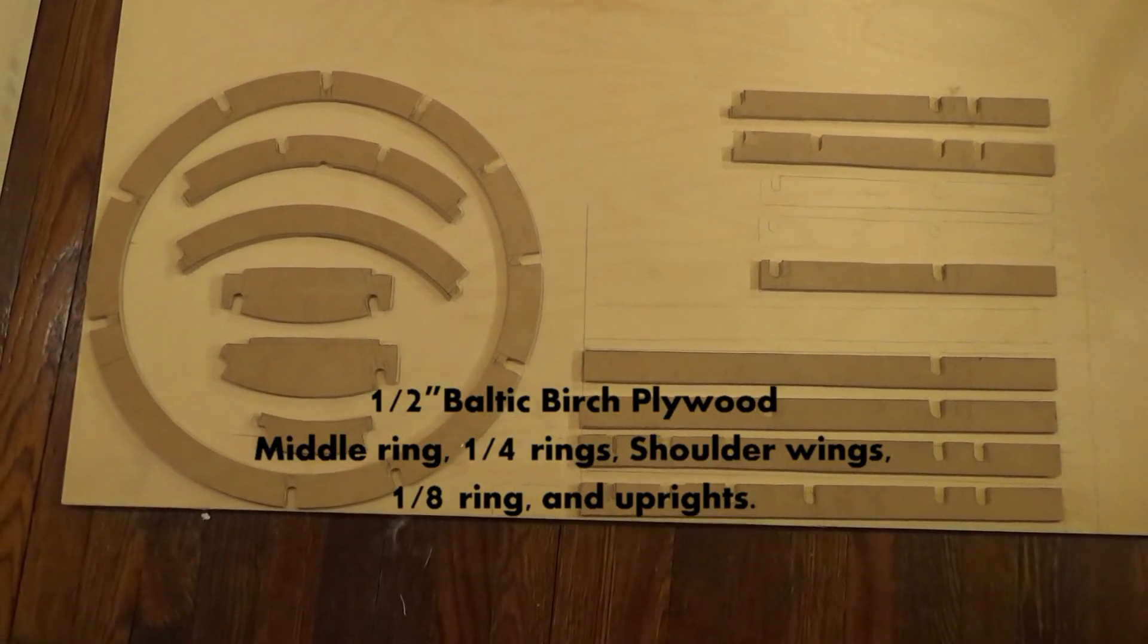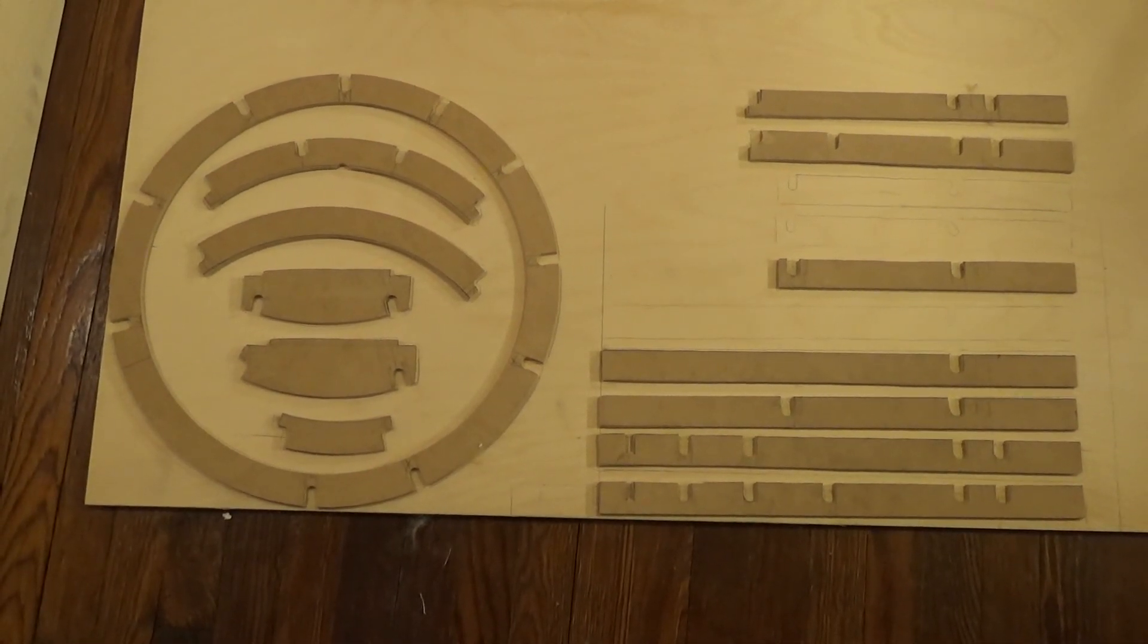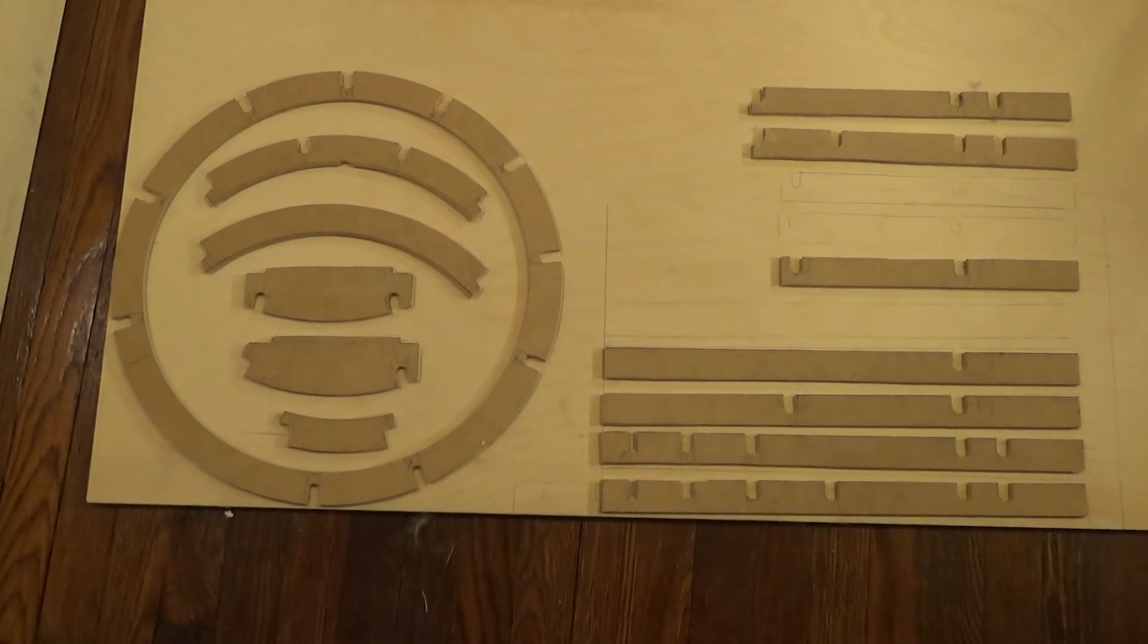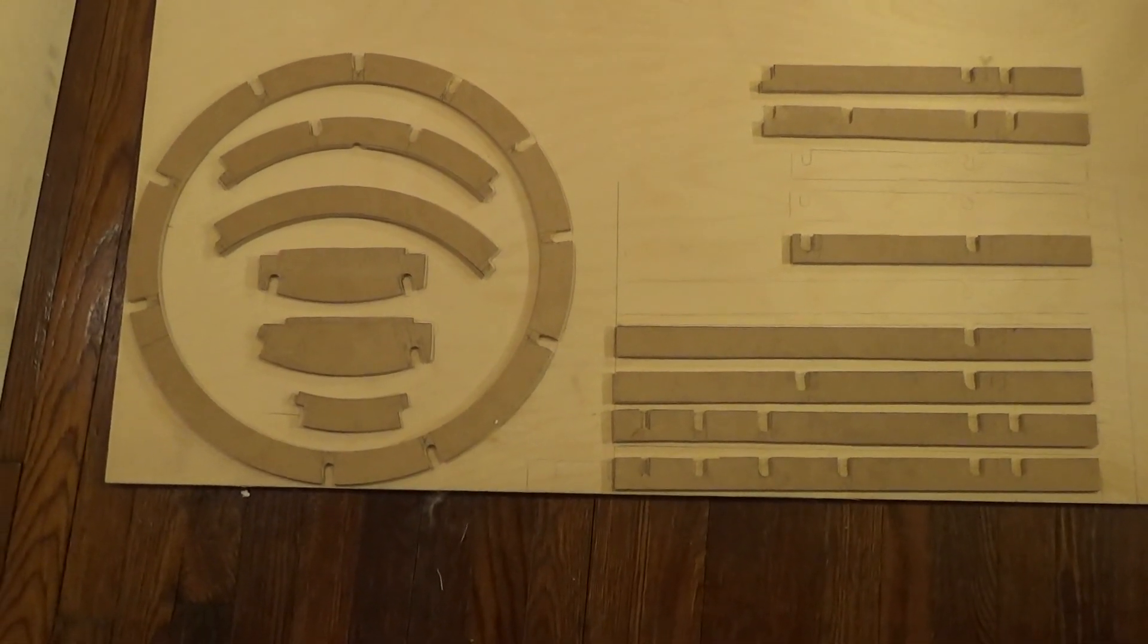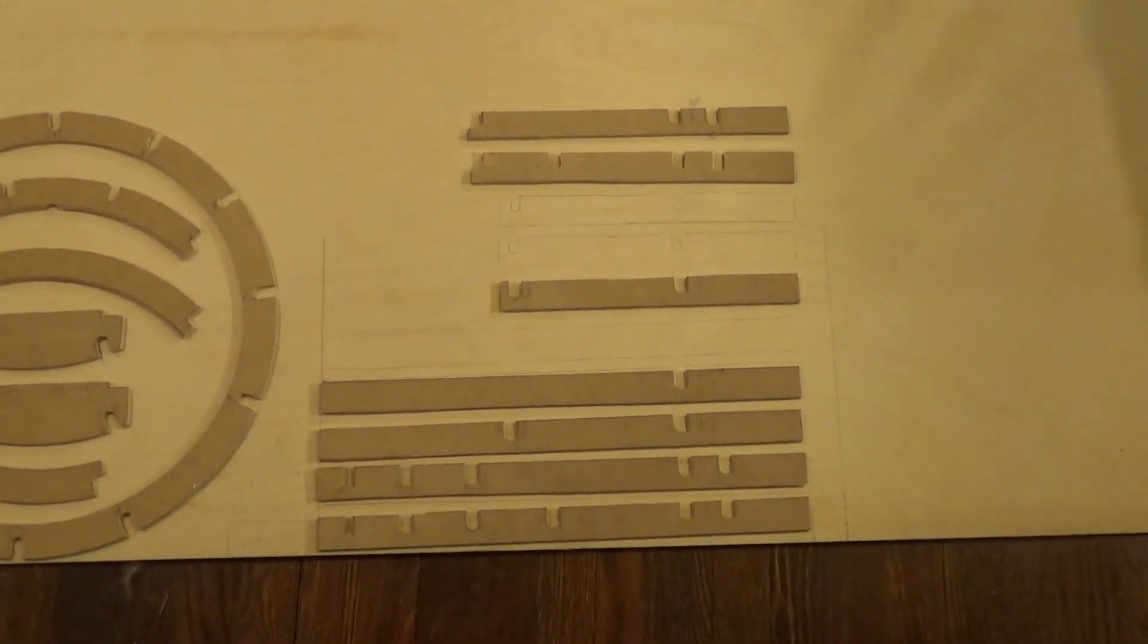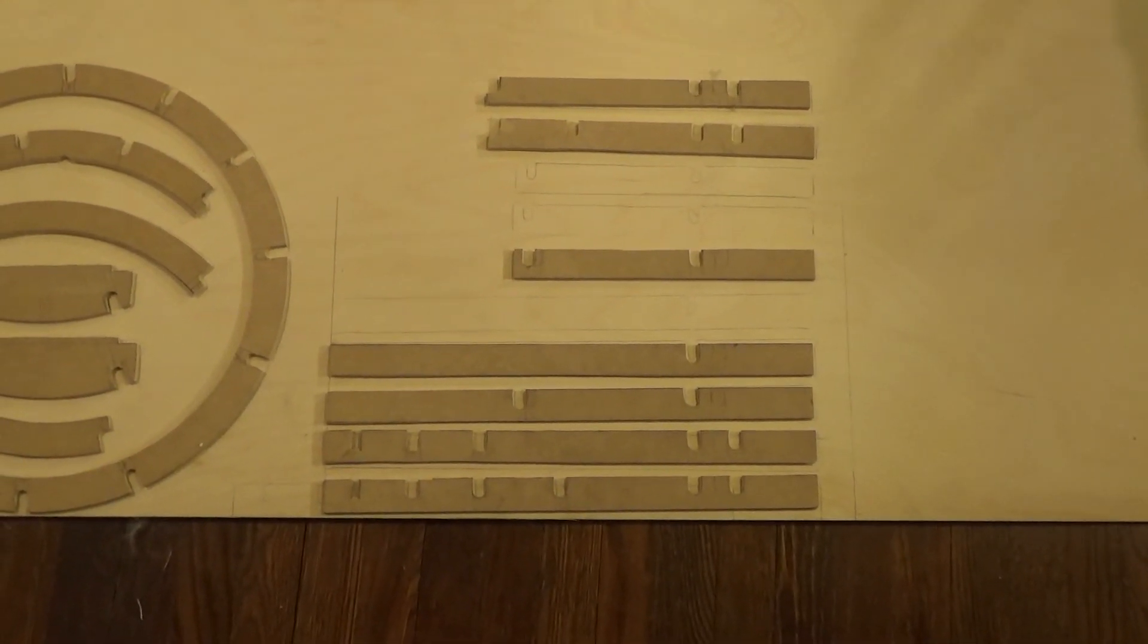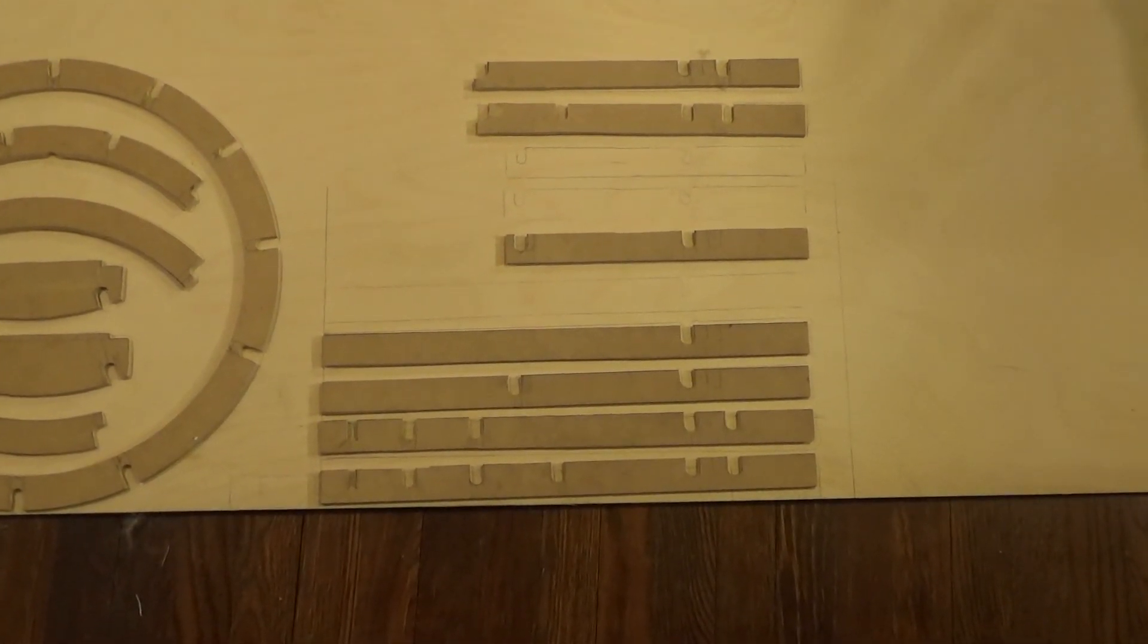I have everything laid out. This is on a half inch piece of Baltic birch. I have your two quarter inch wings, your full and your cut wing. I have your two right there in the middle, and then I have your eighth ring. Seven templates that are going to be used for the uprights. There will be a total of 10 uprights.